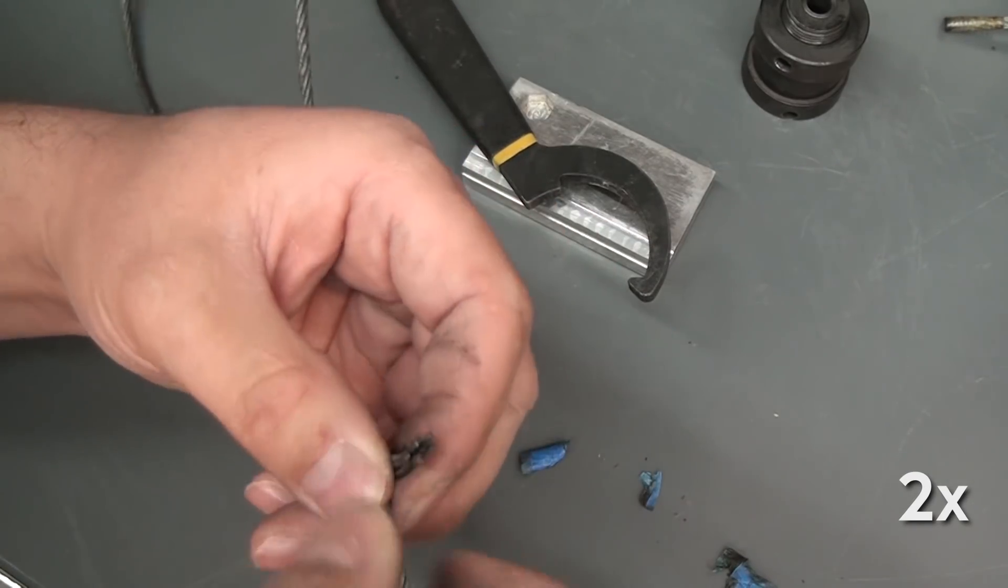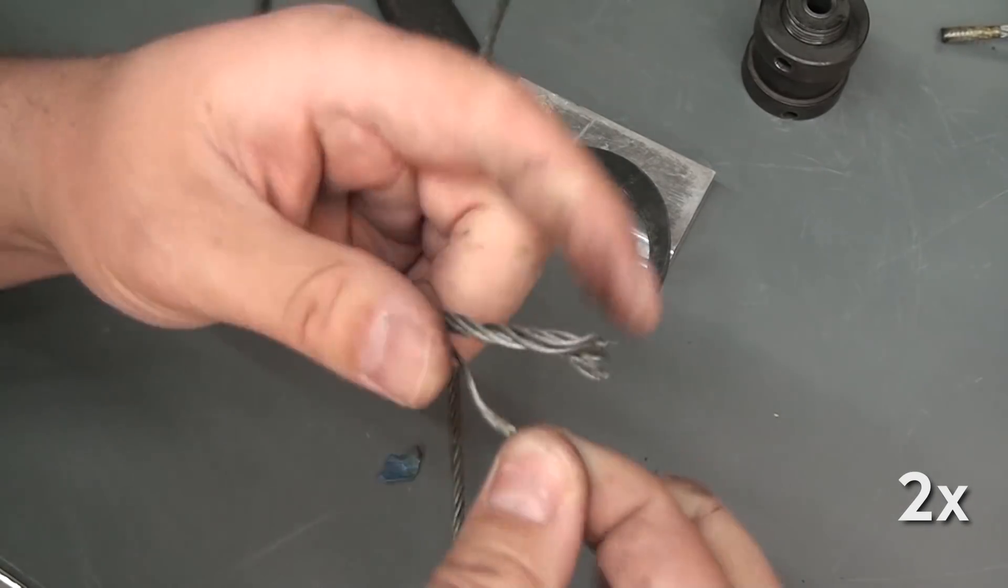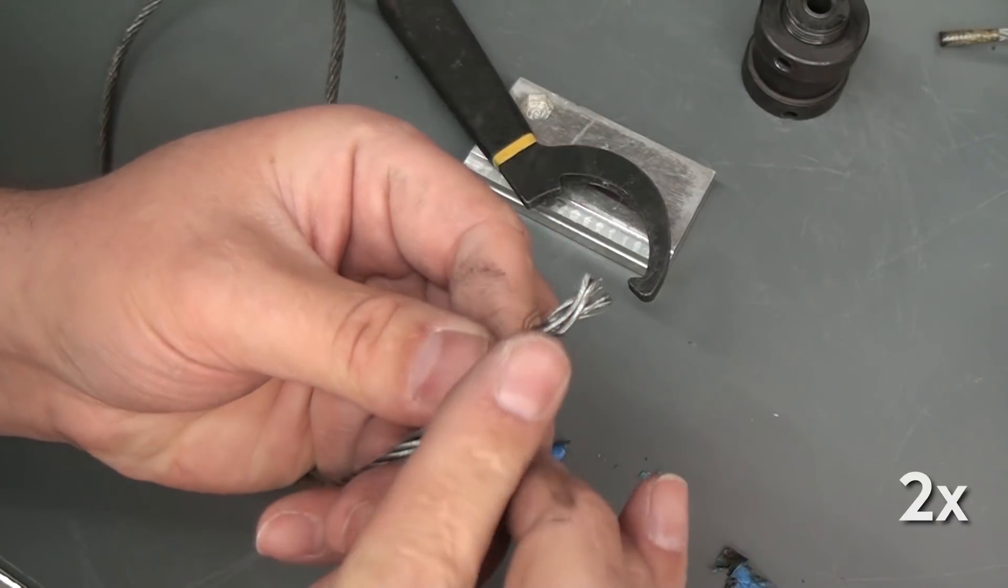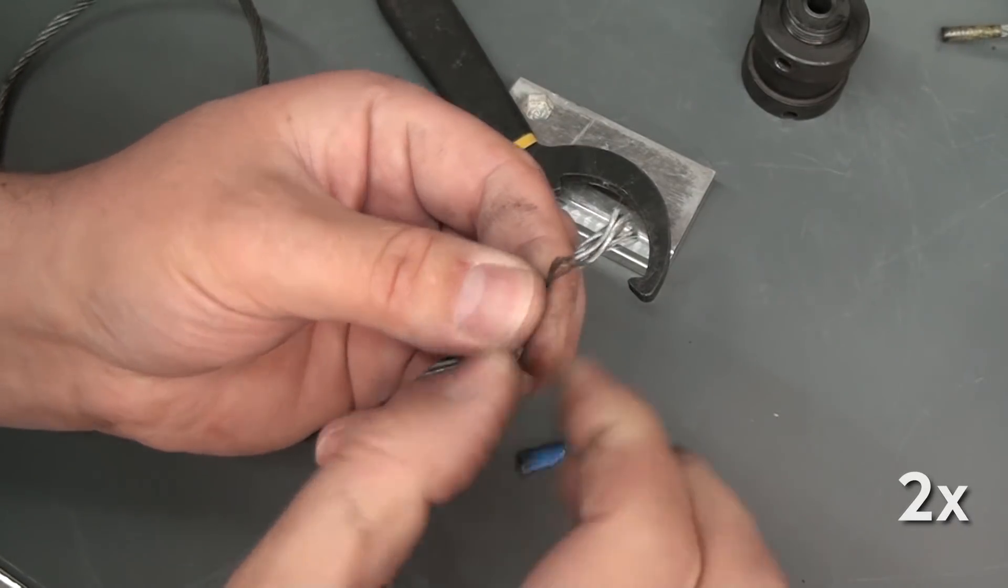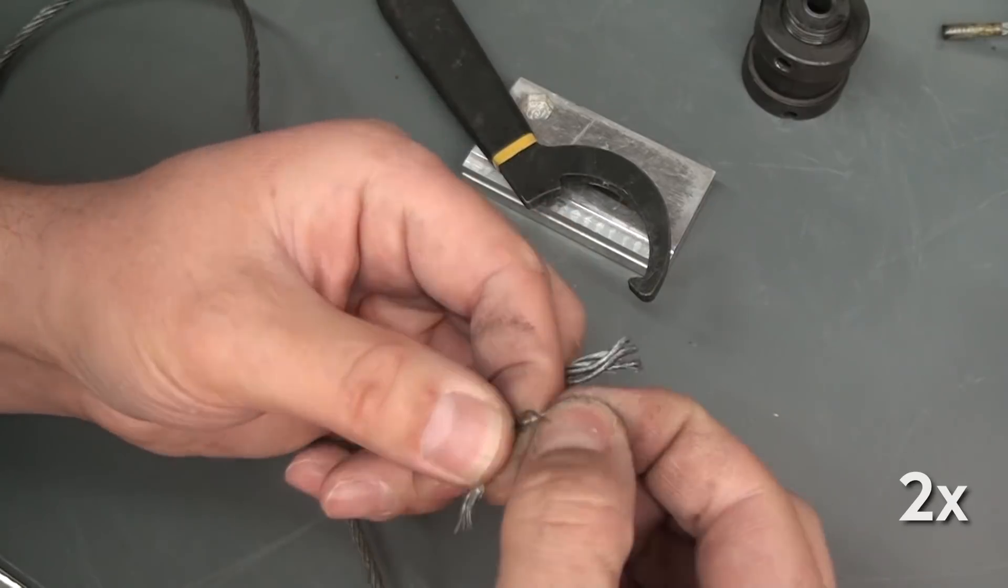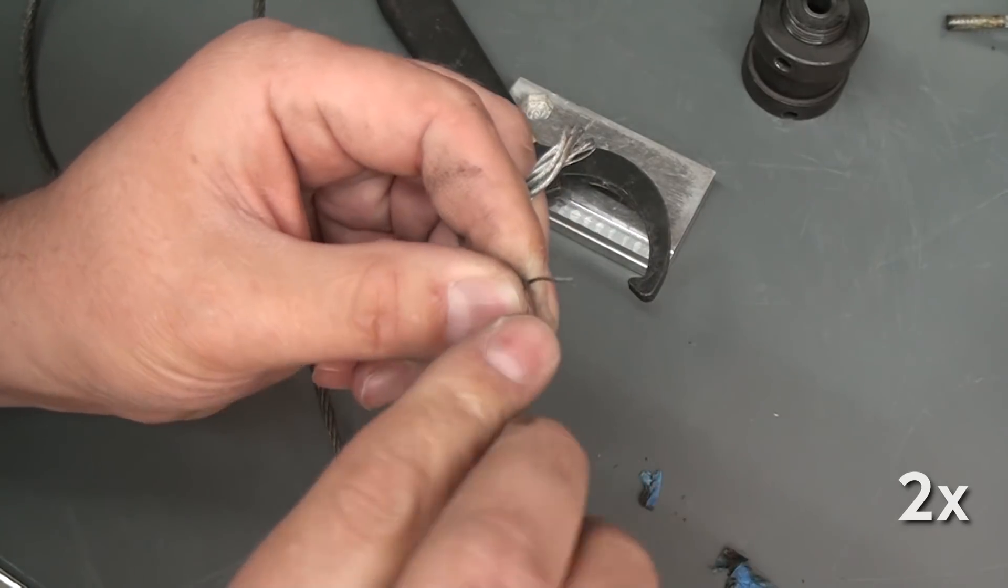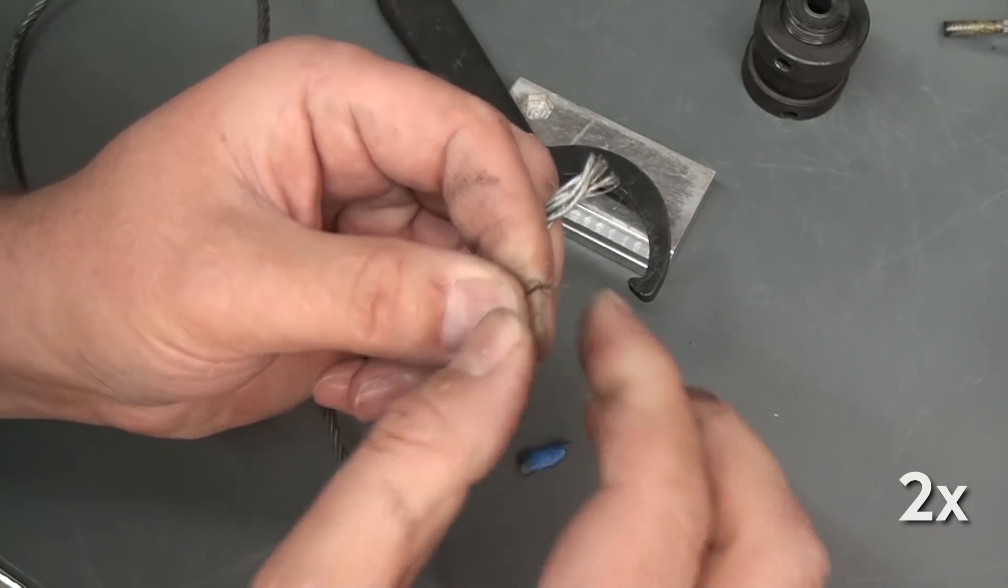McMaster lists this as their ultra flexible stainless steel cable. So I thought it was going to work. And I had some debate on what cable to go with because one of my buddies that has a surface grinder told me that his cable is very similar to the stuff I ended up ordering and what was already on my machine.